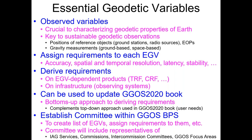Once you've defined that list of essential geodetic variables, you can do more. You can assign requirements to each of those variables — requirements on accuracy, on spatial and temporal resolution, on how timely the observation needs to be available, and on the stability of the observation over time. Then once you've assigned requirements to the fundamental variables, you can derive requirements on products that depend upon that variable, such as the reference frame, which depends upon station position observations, or the celestial reference frame, which depends upon radio source coordinates.